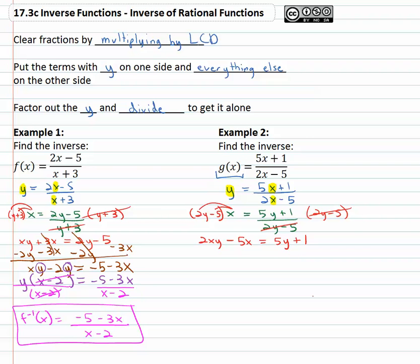Now we need to get the y's on one side, everything else on the other side. So let's move the y's to the left by subtracting 5y and we'll move everything else to the right by adding 5x. Now the y's are all on the left side: 2xy - 5y equals 5x + 1.